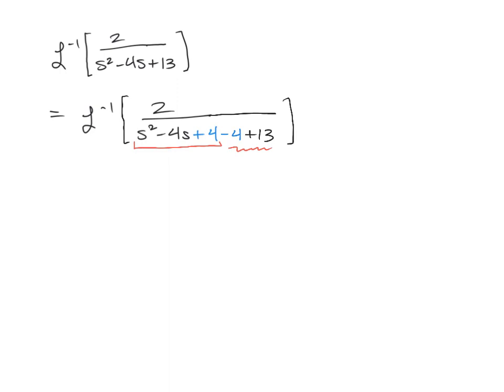So if we go ahead now and actually write that in a factored form, that's just s minus 2 times s minus 2. So that is s minus 2 quantity squared. And of course, if we add up a negative 4 and a 13, we get the number 9.